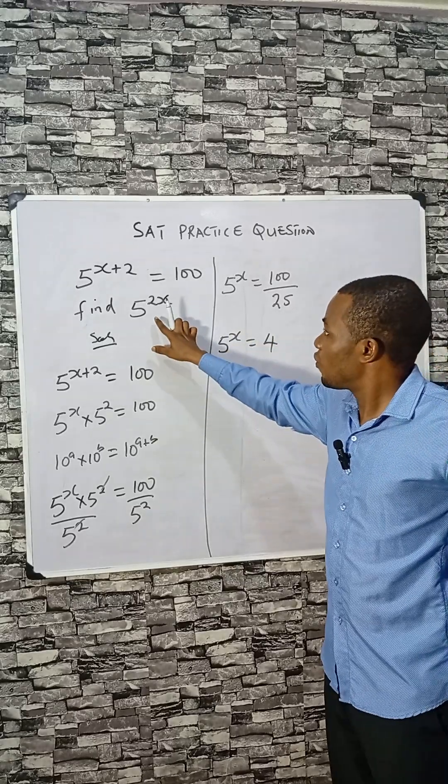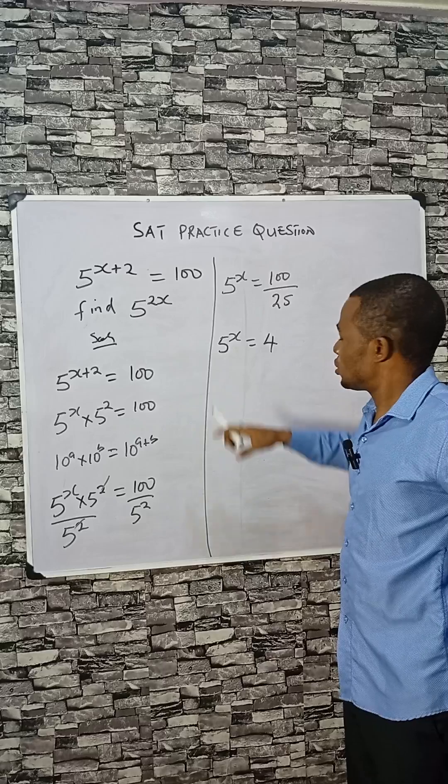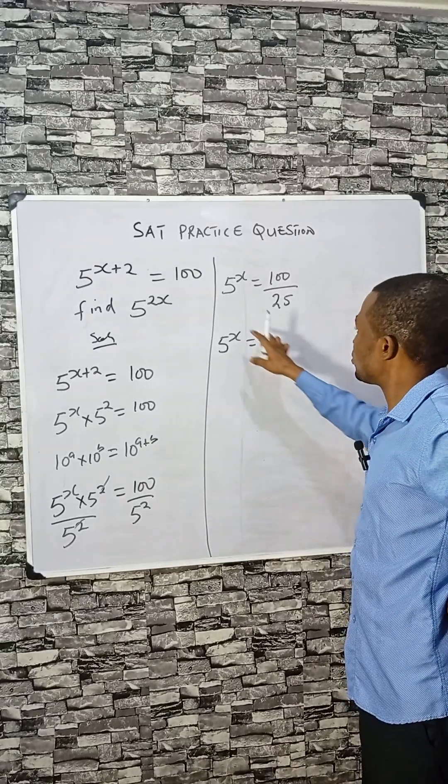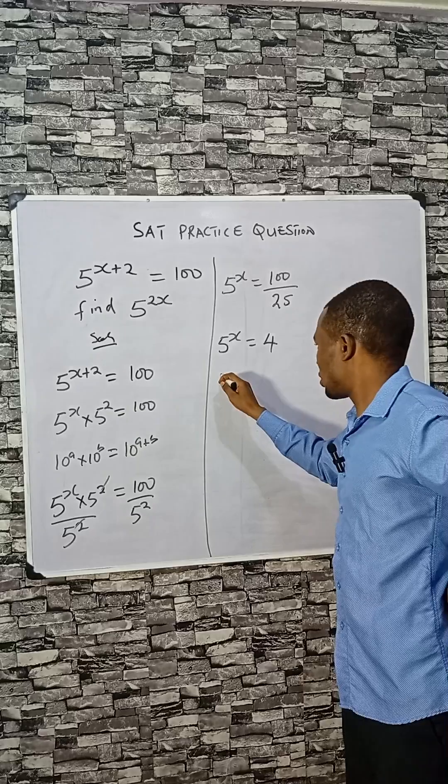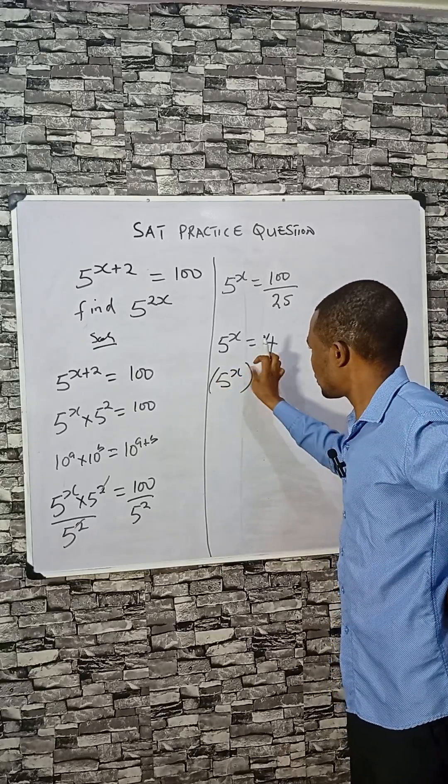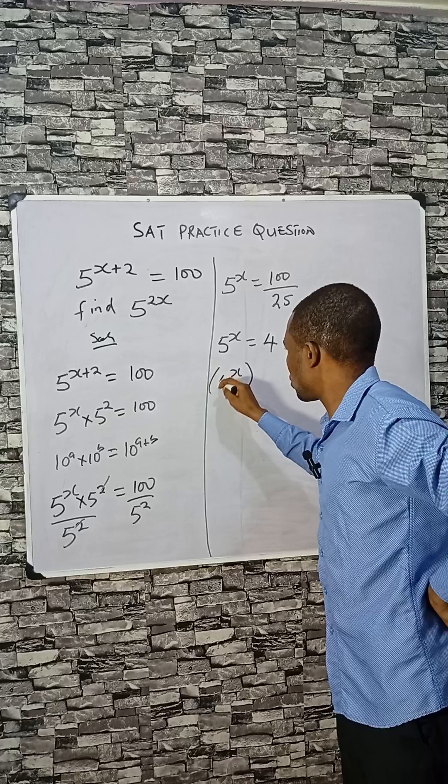And we are asked to find 5 raised to the power of 2x, not this. This is where the logic comes in. All you need to do is take the square of both sides. Look at something here. If you take the square of both sides...